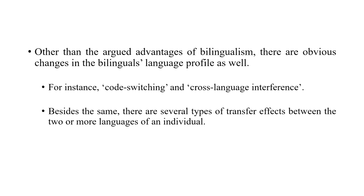Other than cognitive advantages, there are advantages with respect to the overall linguistic profile as well. Being bilingual means you can smoothly code-switch — talking in English but switching into Hindi, or vice versa, sometimes effortlessly. But in early stages of picking up a second or third language you would also experience cross-language interference, where you search for an English word and end up using Hindi, Tamil, or Bangla instead. There are also several kinds of transfer effects that exist between two or more languages of the individual, and these have been documented and researched.